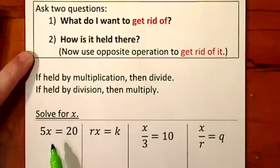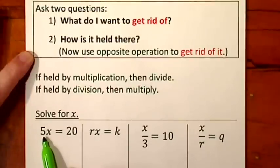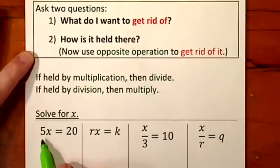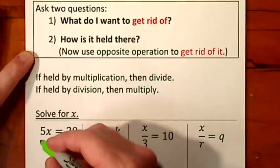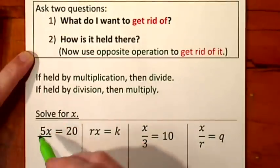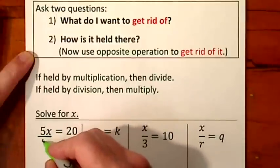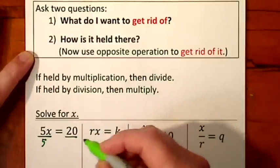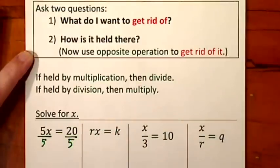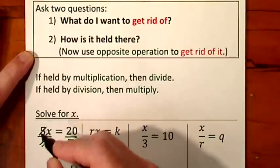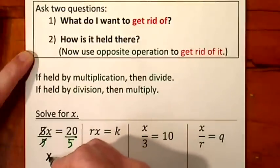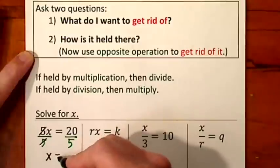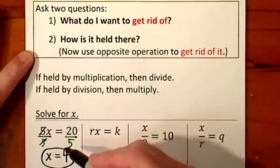Looking at the first equation, I want to get rid of the 5. That way I'll have x all by itself. The 5 is held by multiplication — that's the math shorthand; a number next to a letter means to multiply. So I will divide by 5 on each side of the equal sign. By putting a bar underneath this term, this says divide by 5 on each side. 5 goes into 5 one time, so I have 1x, or I can simply write x. Equals — bring down your equal sign — 20 divided by 5 is 4, and we have the solution to the first equation.